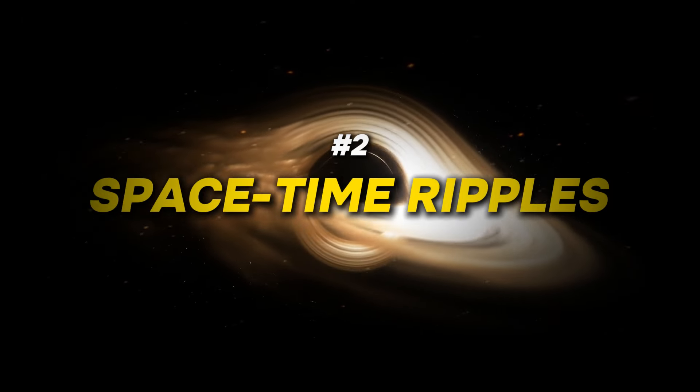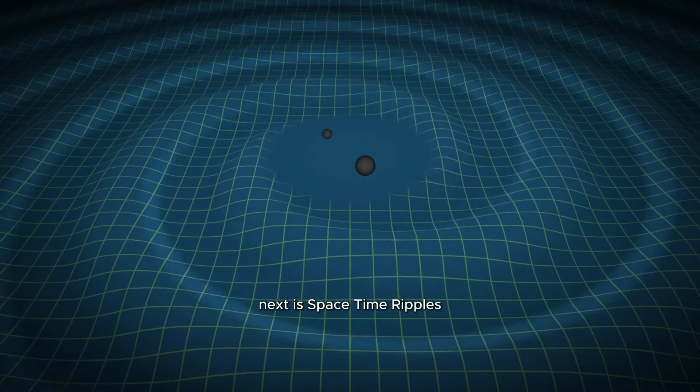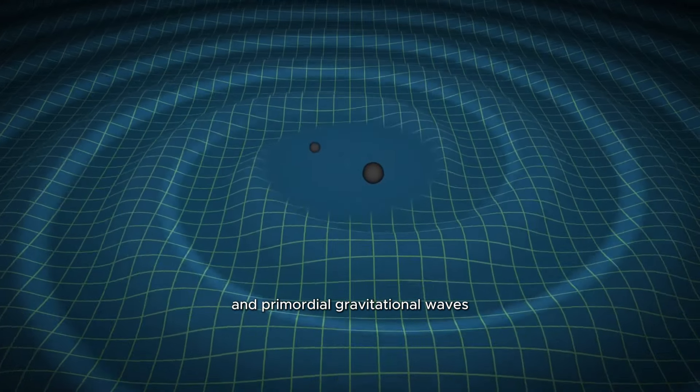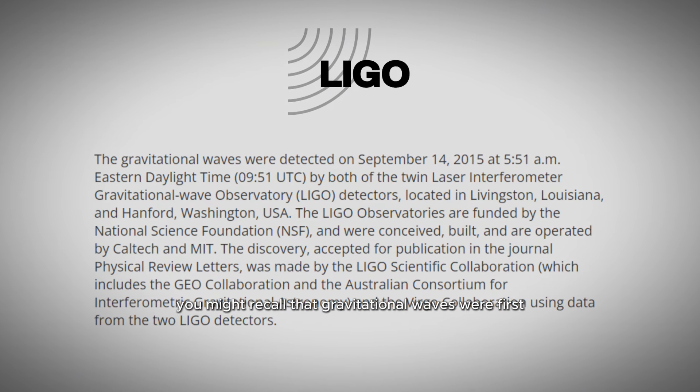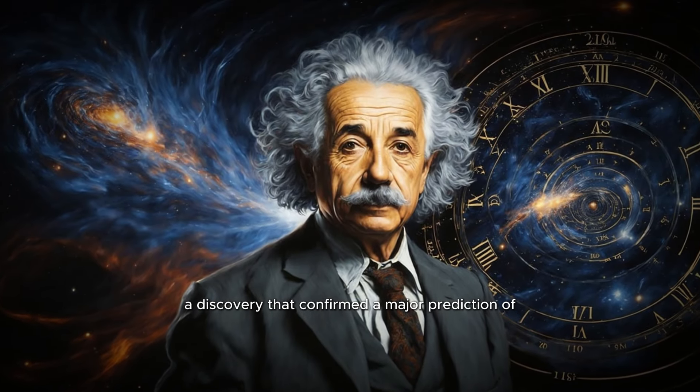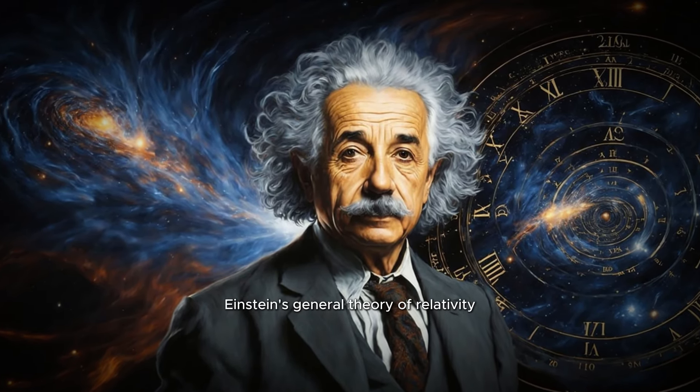Next is space-time ripples, which focuses on detecting low-frequency and primordial gravitational waves. You might recall that gravitational waves were first directly detected in 2015, a discovery that confirmed a major prediction of Einstein's general theory of relativity.